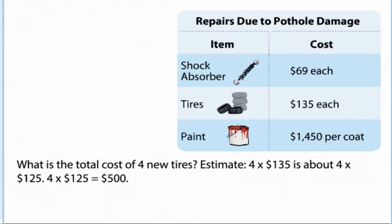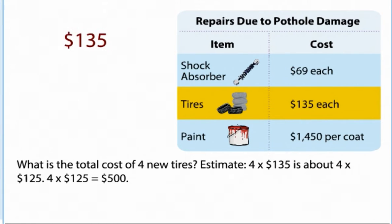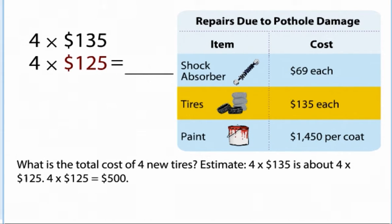What is the total cost of four new tires? Estimate: 4 times $135 is about 4 times $125. 4 times $125 equals $500.